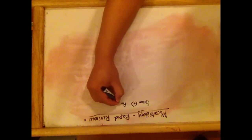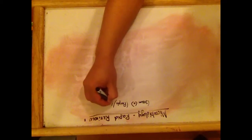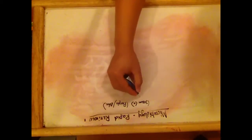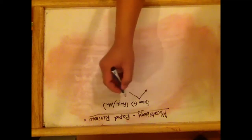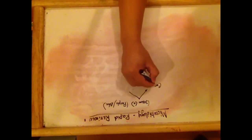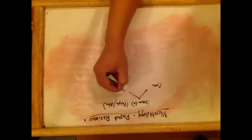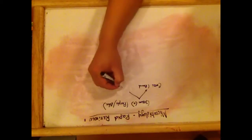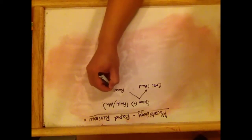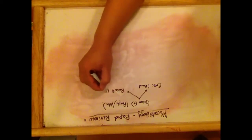Gram-positive organisms will appear either purple or blue. Gram-positive organisms can either be cocci, which are round, or bacilli, which are rods.